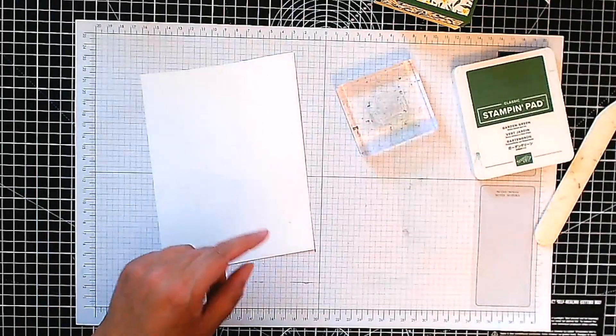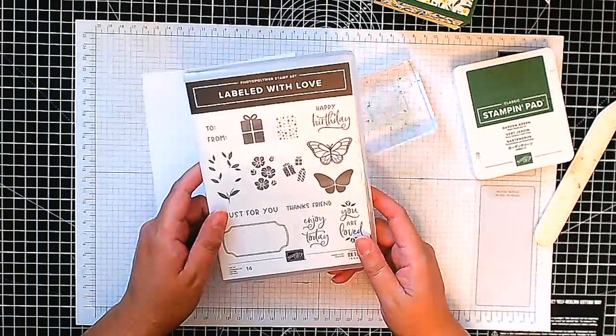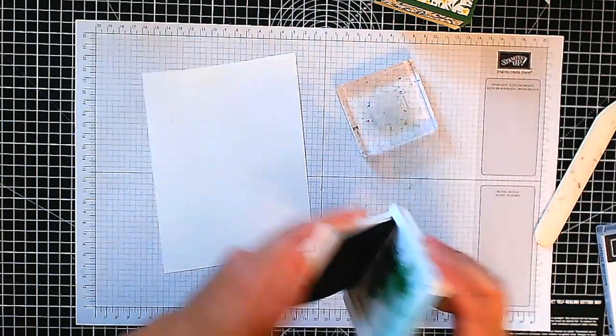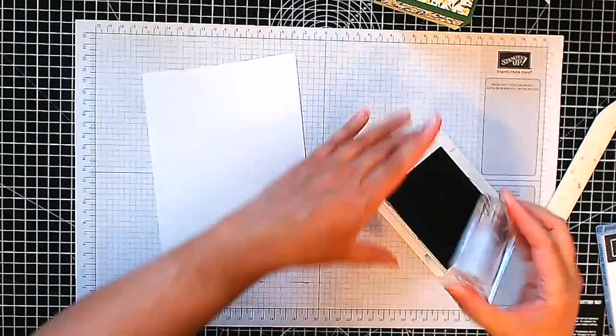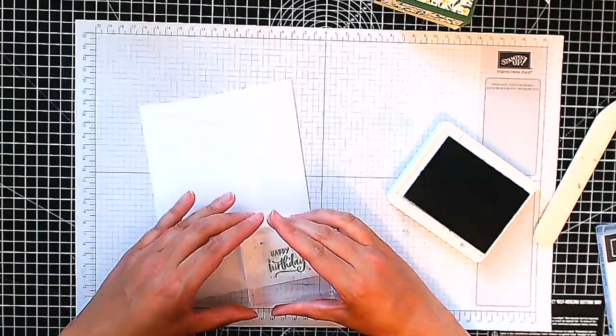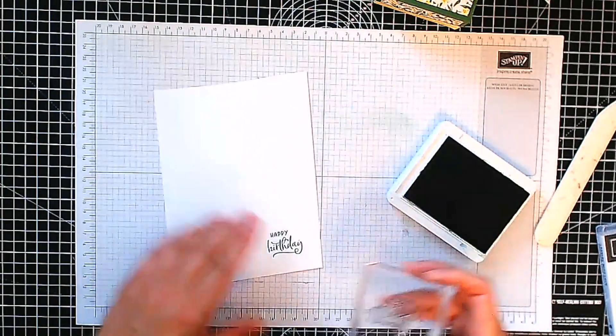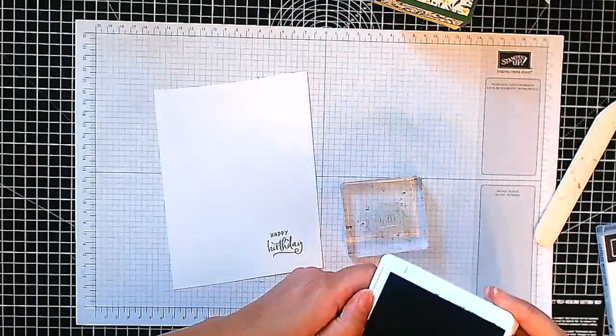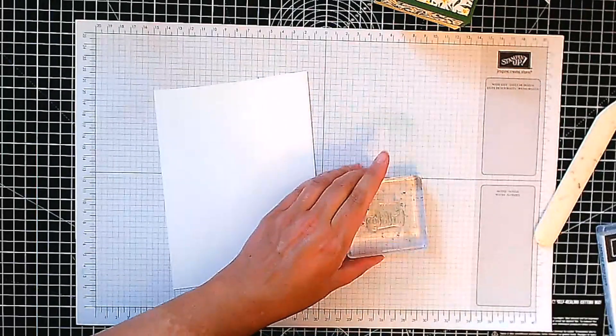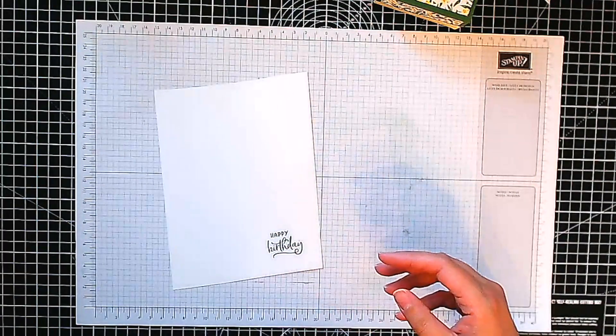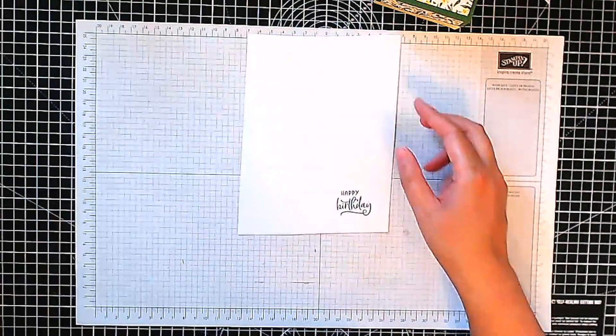It's a scrap piece here of Basic White cardstock. We use this stamp set called Labeled with Love, so I'm going to use Happy Birthday in Garden Green ink. And then just stamp down, hold, lovely. Close that up. Set that aside, don't need that. And then I'm going to use some of my punches.